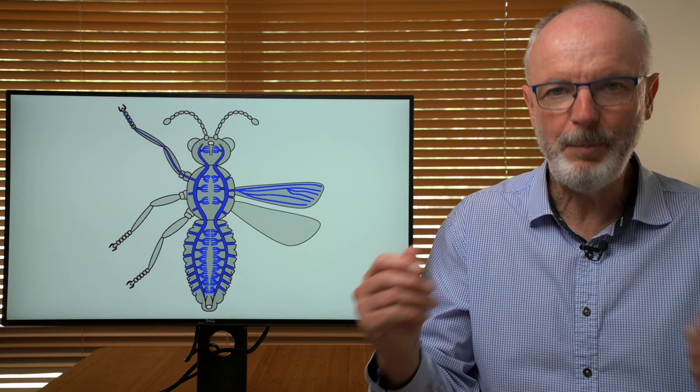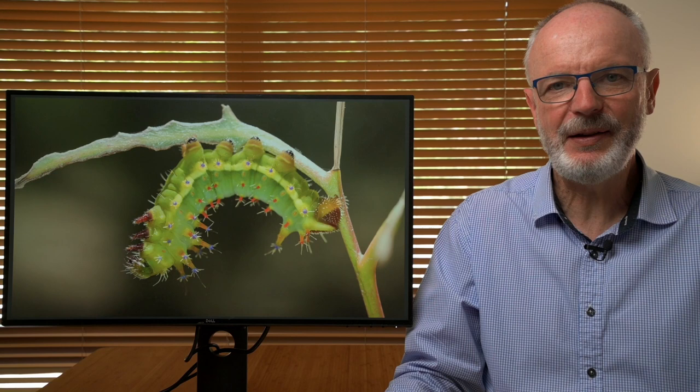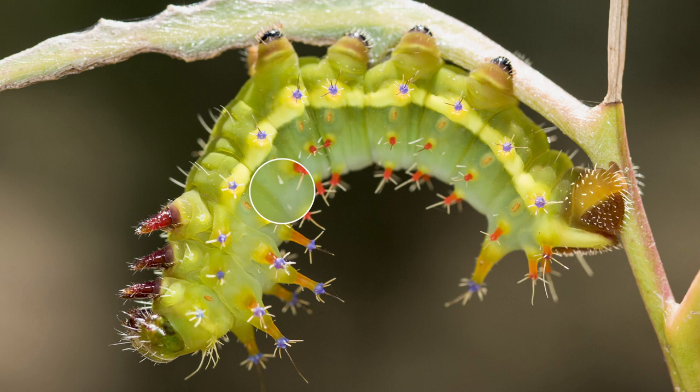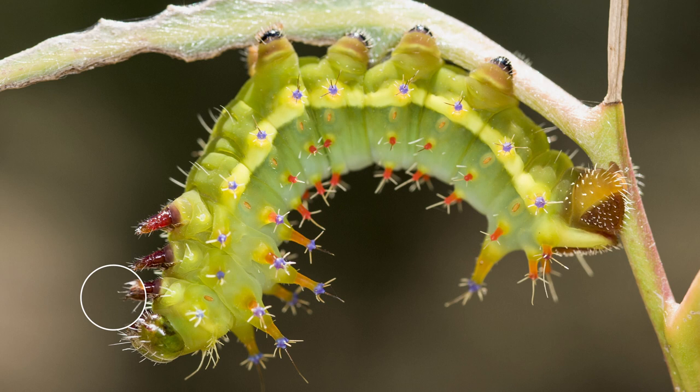Spiracles are easily seen in large caterpillars. The spiracles on this emperor gum moth larvae are the light brown oval-shaped structures. You can see there is one spiracle on each abdominal segment, but only one thoracic segment has a spiracle. Insects don't necessarily have spiracles on all their thoracic and abdominal segments.